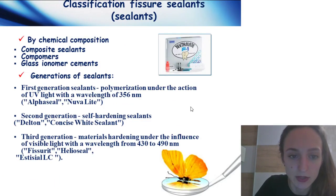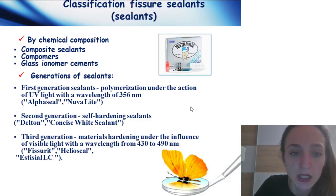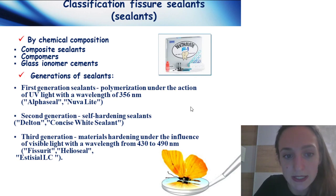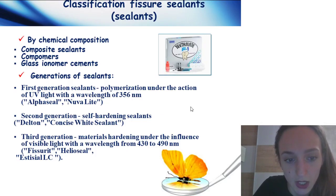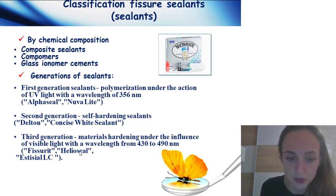Classification of fissure sealants by chemical composition: composite sealants, compomers, and glass ionomer cement. Remember: we use three types of materials — composite, compomers, and glass ionomer cement. Compomers are mixed from two materials: composite and glass ionomer cement. Generations of sealants: first, second, and third. Examples: Alpha-Seal, Helioseal Delton Fissure — third generation.